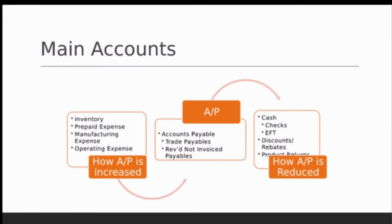Two important terms to know: 'trade payables' typically means anything owed for the trade or operations of the business — you may see that label instead of 'accounts payable.' There's also an account called 'received not invoiced,' which captures the liability when goods have been received but the invoice hasn't come in yet. A system can automatically record that liability based on receipts without needing an invoice.